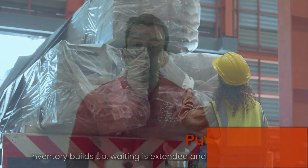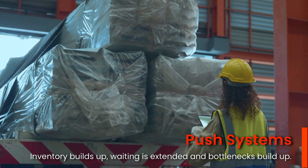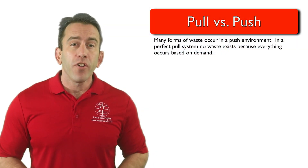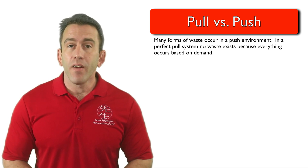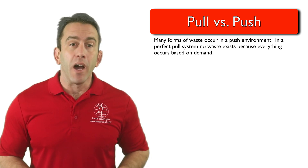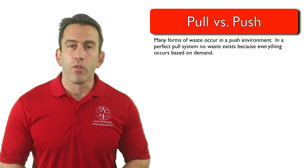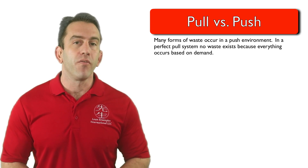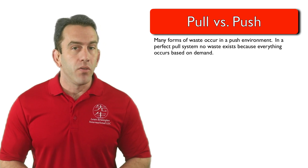There are many forms of waste that occur in the push production environment. Inventory builds up, waiting is extended, and bottlenecks build up too. But in a perfect pull system, no waste exists because everything occurs based on real demand. With this in mind, a pull system will eliminate much of the waste that occurs when you move materials and information downstream when it is ready, rather than when it is needed.